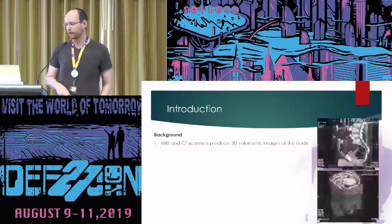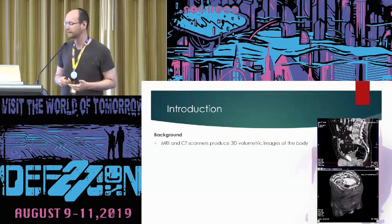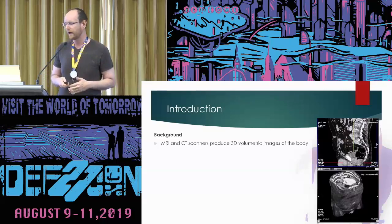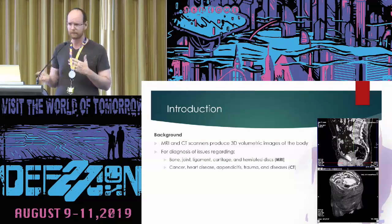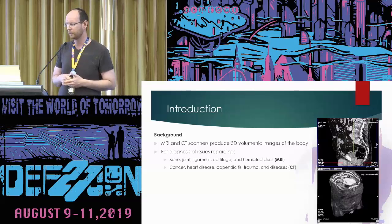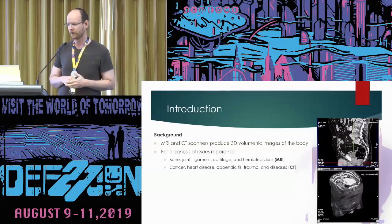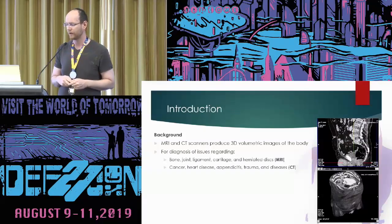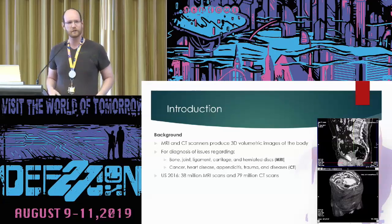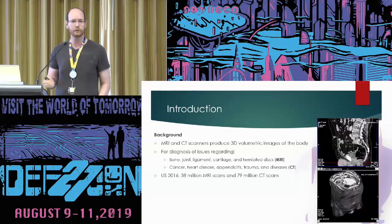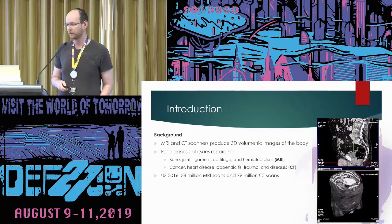A little bit of background. MRI and CT scanners are medical equipment that take 3D volumetric scans of your body, used to diagnose various medical conditions. MRI scans can diagnose problems in bones, joints, ligaments, cartilage, herniated discs, and the brain. CT scans are mostly used for diagnosing cancer, heart disease, appendicitis, trauma, and so on. In the US in 2016 alone, there were about 38 million MRI scans and almost 80 million CT scans, and those numbers keep going up.